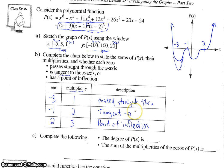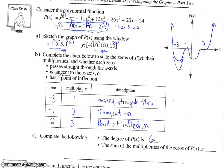Complete the following: the degree of p of x is 6. In expanded form you look at the highest exponent, which is 6. In factored form, you add the exponents on each factor: 1 plus 2 plus 3 equals 6. The sum of the multiplicities of the zeros is also 1 plus 2 plus 3 equals 6. So the sum of the multiplicities and the degree should always equal each other.